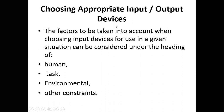Now let's look at choosing appropriate input or output devices. We have a wide variety of input and output devices, so how do we pick a particular one to use? When choosing a device, you need to look at a number of factors: factors relating to the human beings who will use it, factors relating to the task, factors relating to the environment, and other constraints.